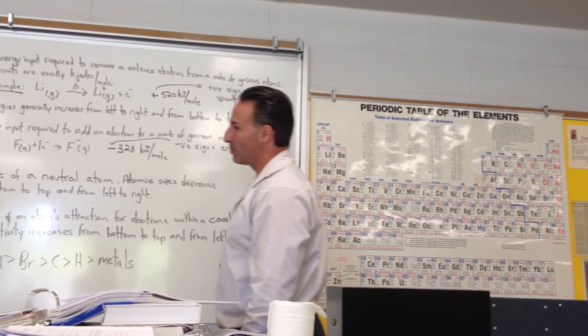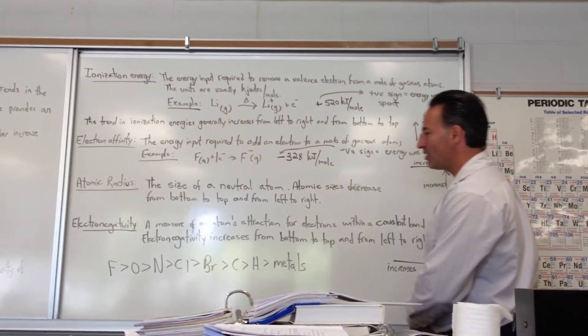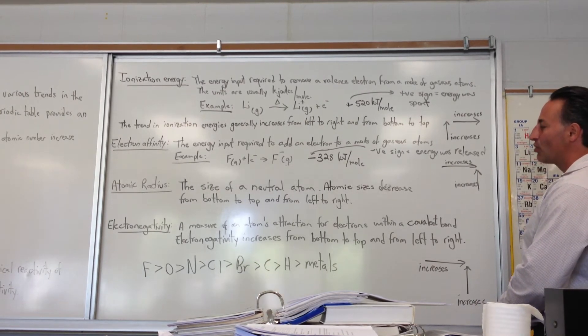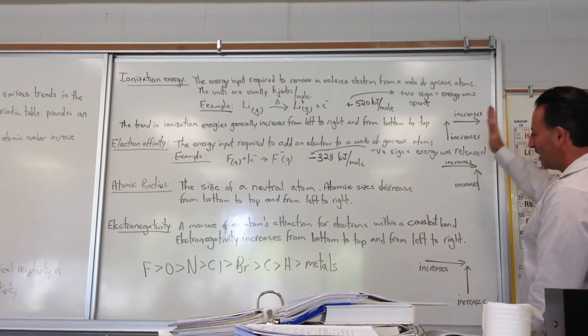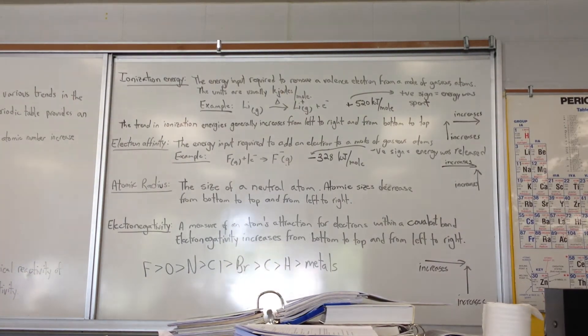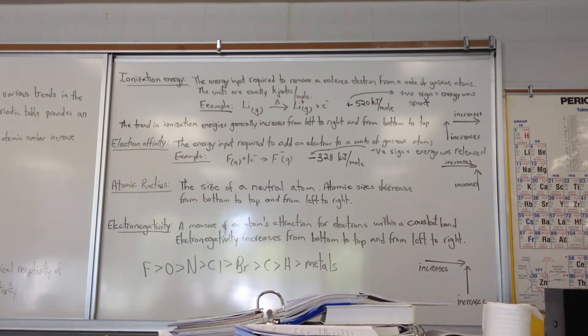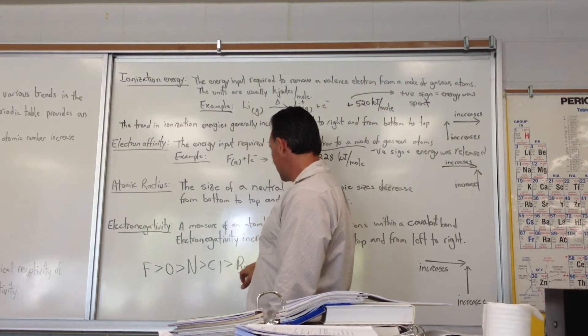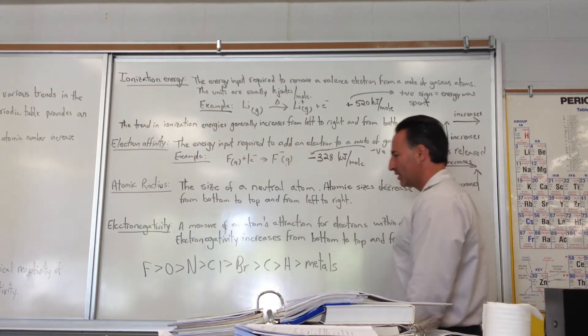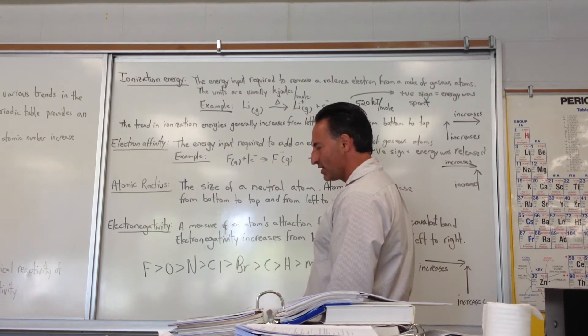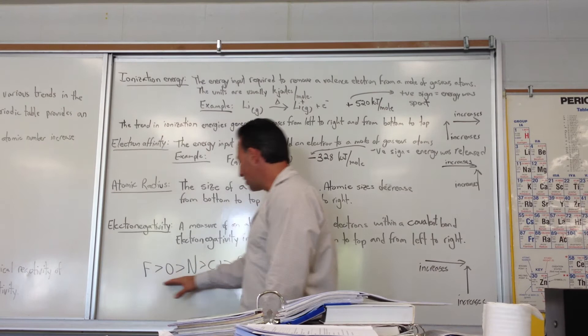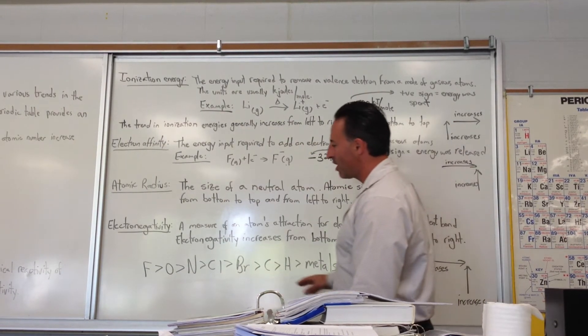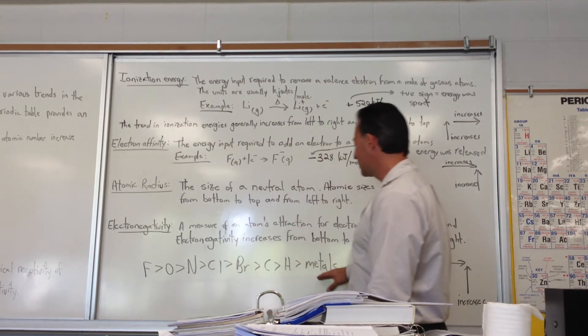The fourth property, perhaps the most important one, is electronegativity. It's a measure of an atom's attraction for electrons within a covalent bond. Electronegativity increases from bottom to top and from left to right. So the most electronegative element is fluorine. And one good mnemonic you can use is: fluorine, oxygen, nitrogen, chlorine, bromine, iodine—or British cavalry here. It may not be very appealing to our British friends, but it's not meant to be offensive. You can also memorize it this way: F O N Cl Br I S C H metals. It's just a mnemonic that lists the most electronegative elements to the least electronegative elements.